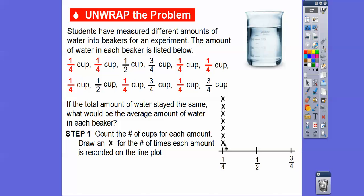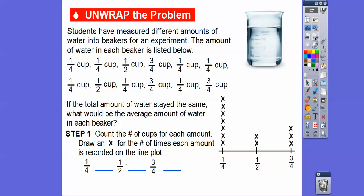Now we're going to do the same thing with the half-cup measurements. We'll highlight the halves in red — there are only two of them, so there are only two X's. And then the three-quarter cups — there are three of them, so we'll highlight those and put three X's. So on the one-fourth cups there were seven, on the one-half cups there were two, and on the three-fourths cups there were three.